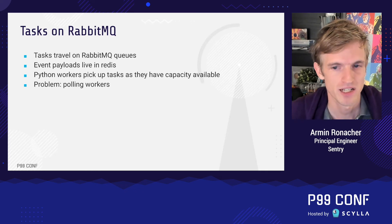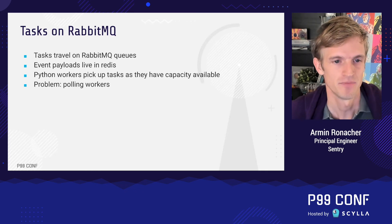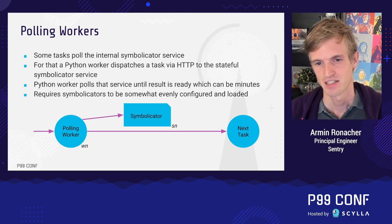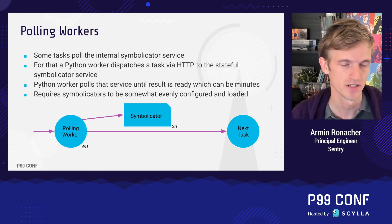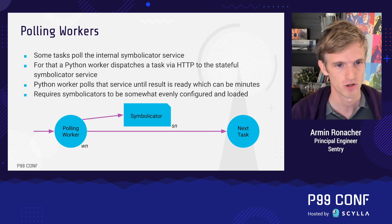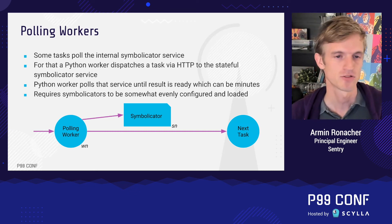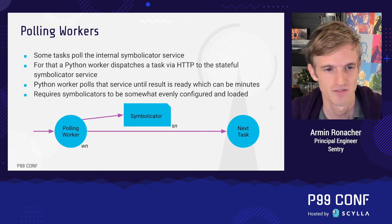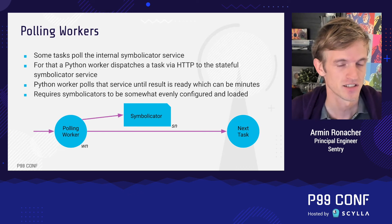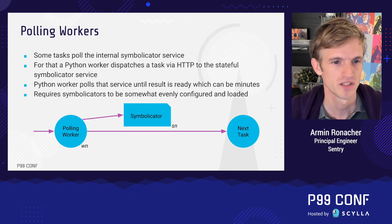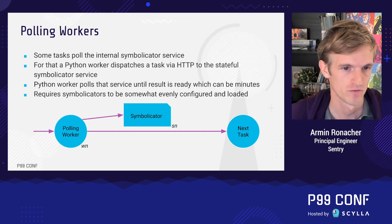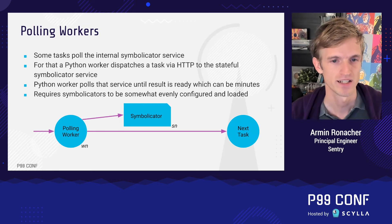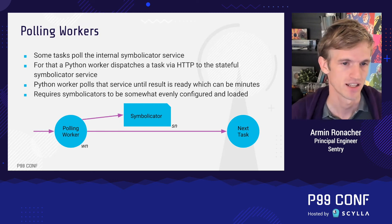The Python workers pick up tasks as they have capacity available. One problem is what we call polling workers. Symbolicator is an independent Rust service not directly sitting on the queue — instead it's driven by a polling worker written in Python for historical reasons. You have N polling workers and a separate scaling factor of N symbolicators; the polling worker puts a task to the symbolicator, lets it process, and polls for the result. This works but has limitations — it requires symbolicators to be somewhat evenly configured, and that wasn't always the case.